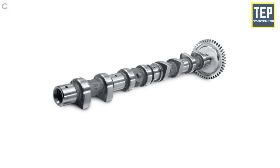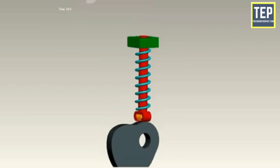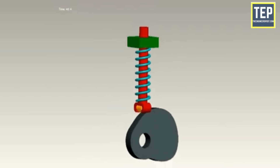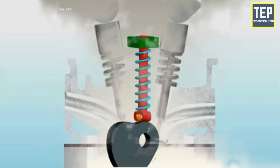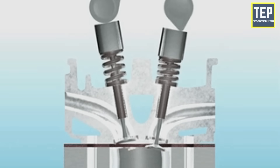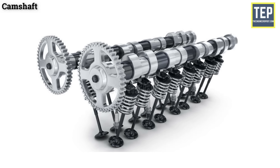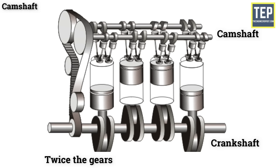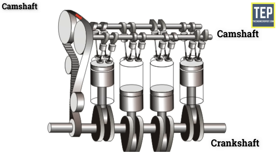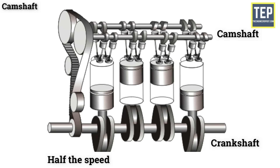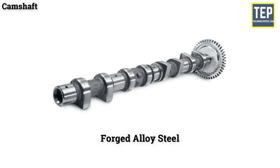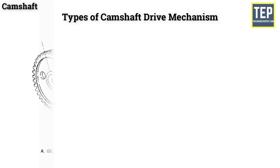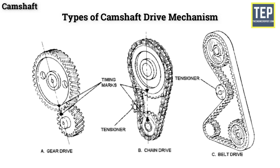A camshaft is a shaft on which cams are mounted. A cam changes the rotary motion of the camshaft into the linear motion of the follower and is responsible for the opening of the valves. The camshaft is driven by the crankshaft, has twice as many teeth, and turns at half the speed of the crankshaft. Camshafts are made from forged alloy steel. There are three types of camshaft drive mechanisms: gear drive, chain drive, and belt drive.